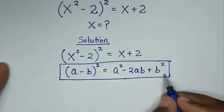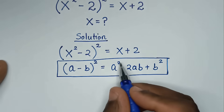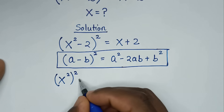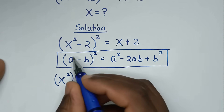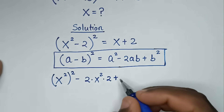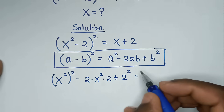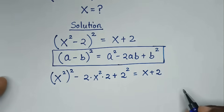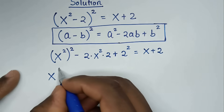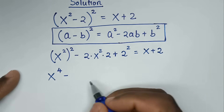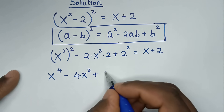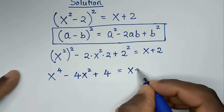We'll use this form here. To expand this part, a² will be x², then (x²)², then minus 2ab will be minus 2 times x² times 2, then plus b² will be 2², equal to x + 2. In the next step, it will be x⁴ minus 2 times 2 which is 4, so it will be 4x², plus 2² which is 4, equals x + 2.